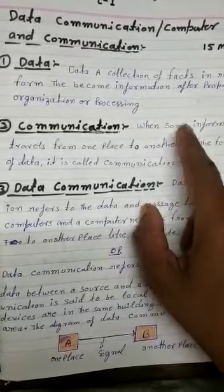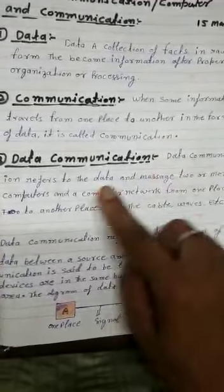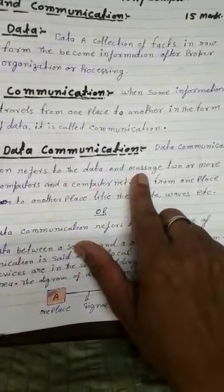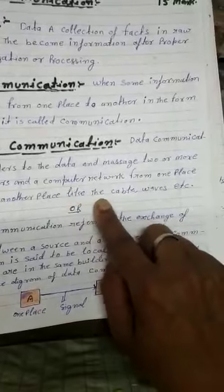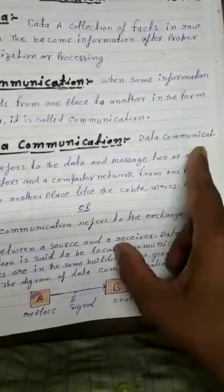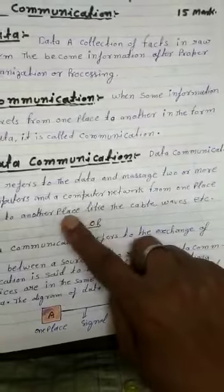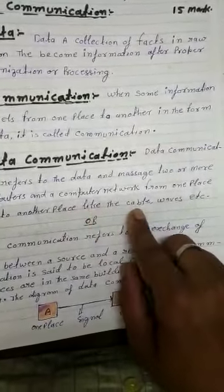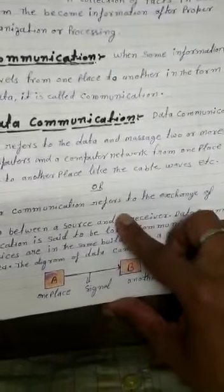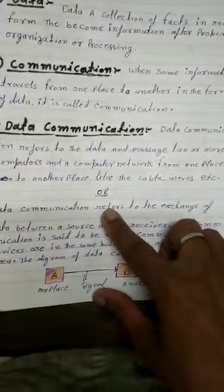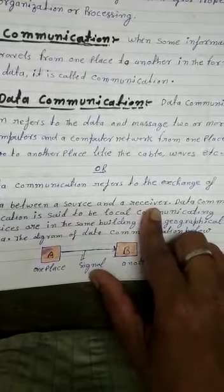The third is data communication. Data communication refers to the exchange of data and messages between two or more computers over a network from one place to another place, like through cables and waves. Data communication refers to the exchange of data between a source and a receiver.